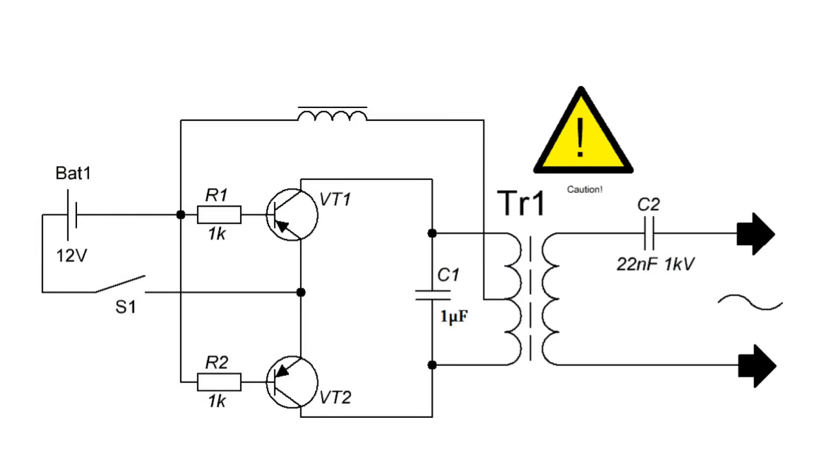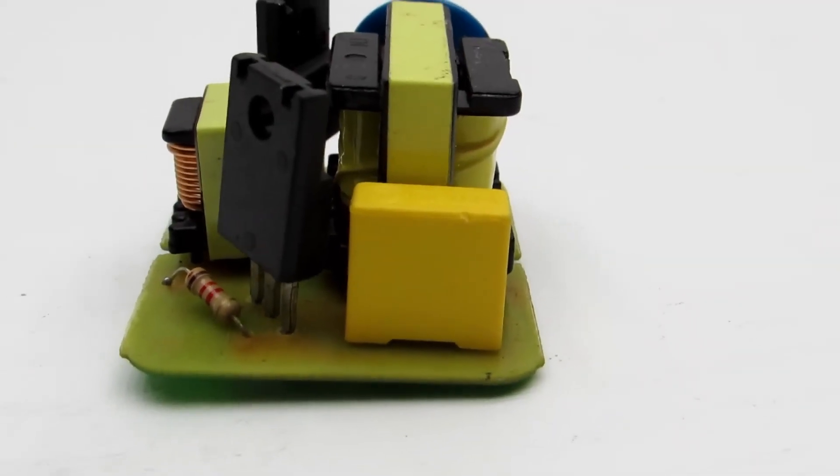Essentially, it's a very typical two-stroke self-oscillating pulse converter. It doesn't have a proper generator, and the operating frequency will depend on the inductance of the primary winding and the capacitance of the capacitor, which is connected in parallel to this winding. Together, they form a parallel resonant circuit, in other words, it's a resonant converter.